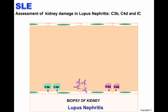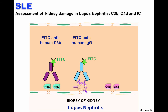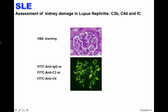You can assess the level of kidney damage by taking a biopsy and performing an H&E staining and an immunofluorescence assay. In the case of an immunofluorescence assay, antibodies that specifically recognize C3B, IgG antibodies, and C4D — a subfragment of C4B — are used to determine the extent of the kidney damage. These antibodies are labeled with FITC, a fluorescence dye. As you can see in the image, it is an example of H&E staining of the glomerulus. The next image shows a typical immunofluorescence assay to determine lupus nephritis using FITC anti-IgG, anti-C3, or anti-C4. The damage is classified in six categories that reflect the degree of progression of lupus nephritis.